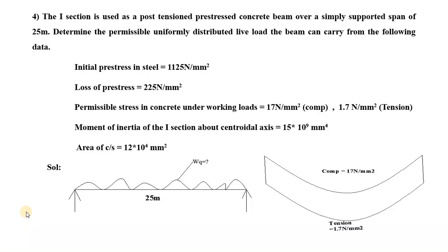Hello everyone. Let's solve one more problem from module 1. The I-section is used as a post-tension pre-stressed concrete beam over a simply supported span of 25 meters. Determine the permissible uniformly distributed live load the beam can carry from the following data. Initial pre-stress in steel is 1125 Newton per mm square.